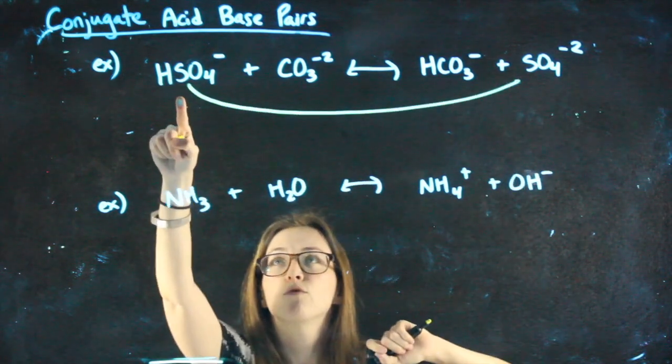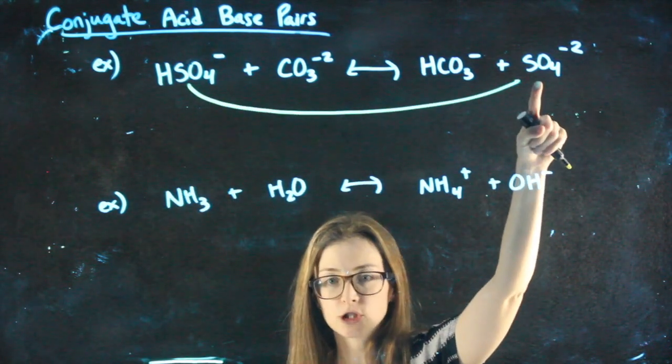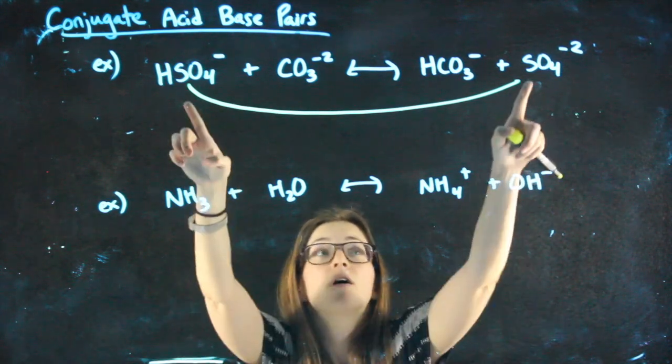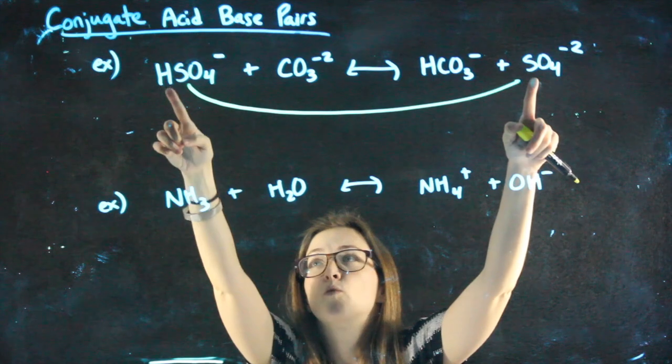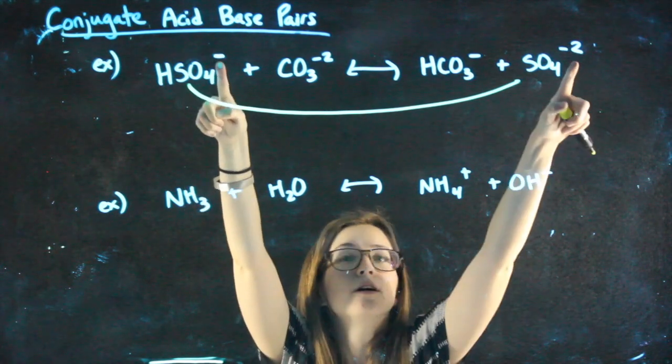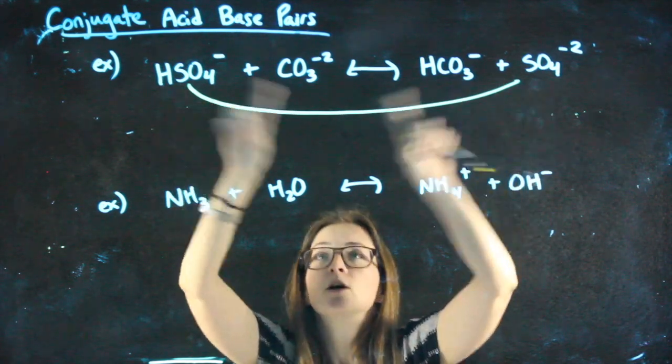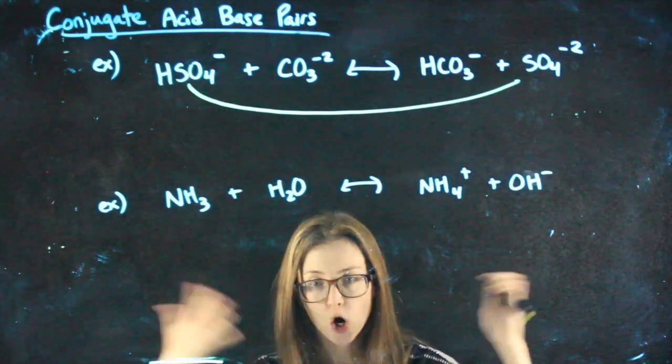HSO4- and SO4-2—that's a pair, an acid-base pair. Why? All that's different about them is this one has one more H+. Its charge is one higher, a little more positive, and it has one more hydrogen than this one. So that is an acid-base pair, a conjugate pair.